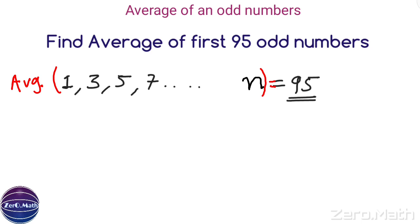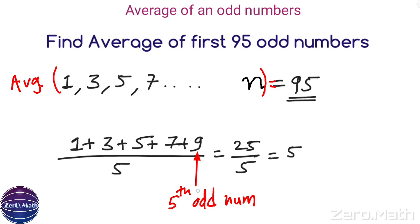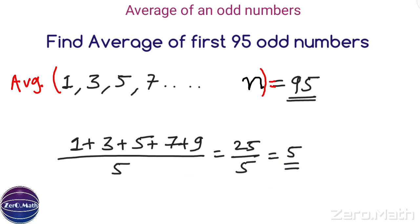Let us find the average of the first 5 odd numbers. The first five odd numbers are 1, 3, 5, 7, and 9. Sum divided by count of 5: 1 + 3 + 5 + 7 + 9 = 25, divided by 5, equals 5. You can see that 9 is the 5th odd term, and the average is 5, which equals N. I hope you understood this short trick correctly.